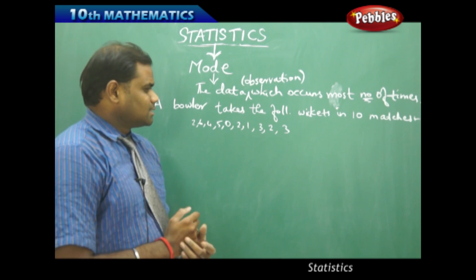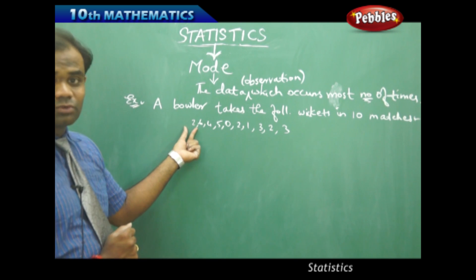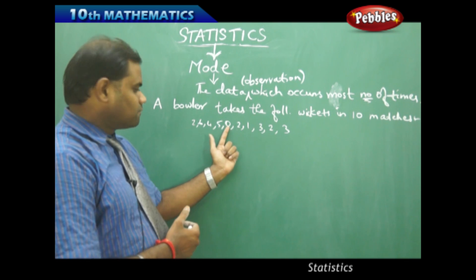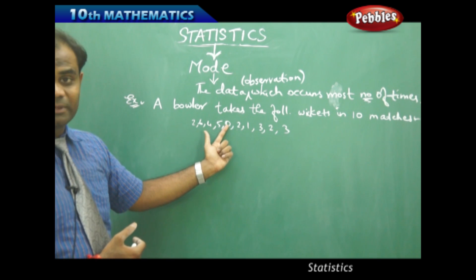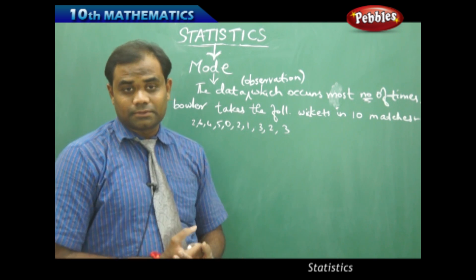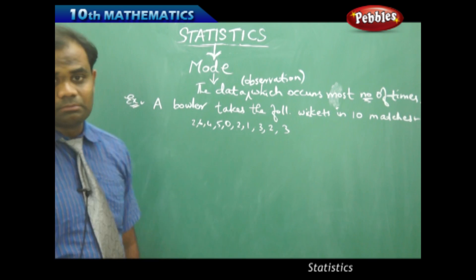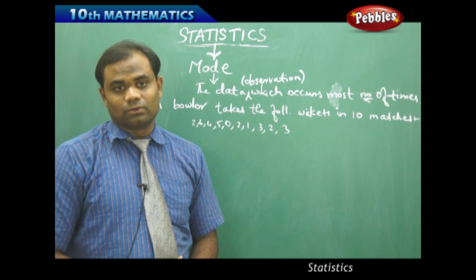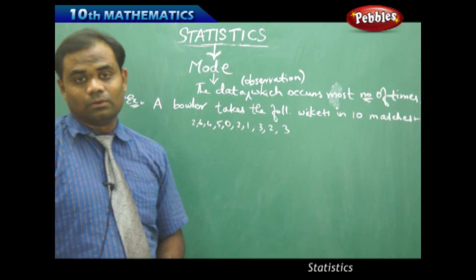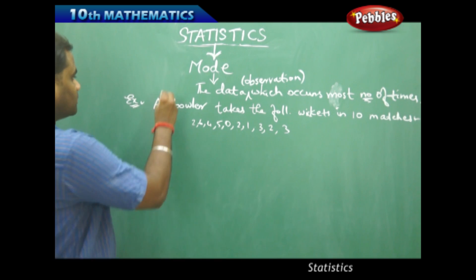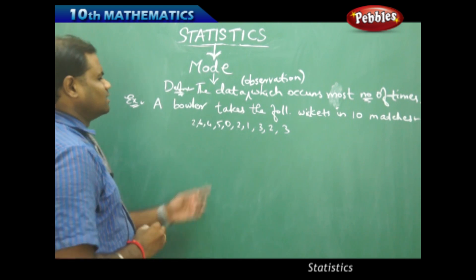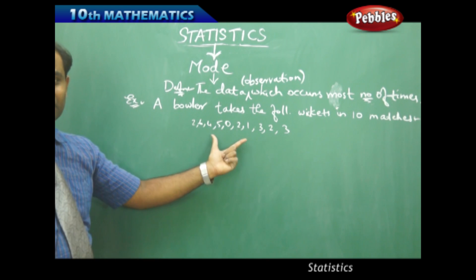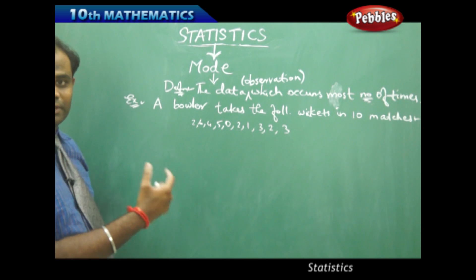In the first match he takes 2 wickets, in the second match 6 wickets, in the third match 4 wickets. In the fifth match he doesn't take any wickets — not a good performance — and finally in the tenth match he takes 3 wickets. Now I want to understand this problem using the statistical measure of central tendency called mode.